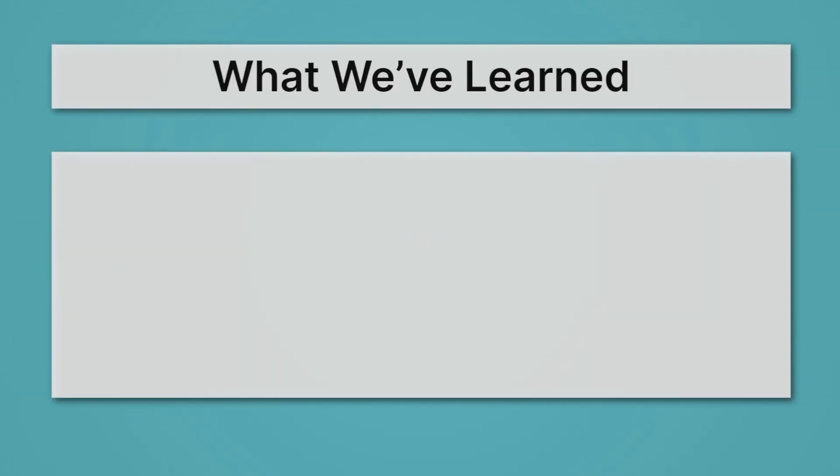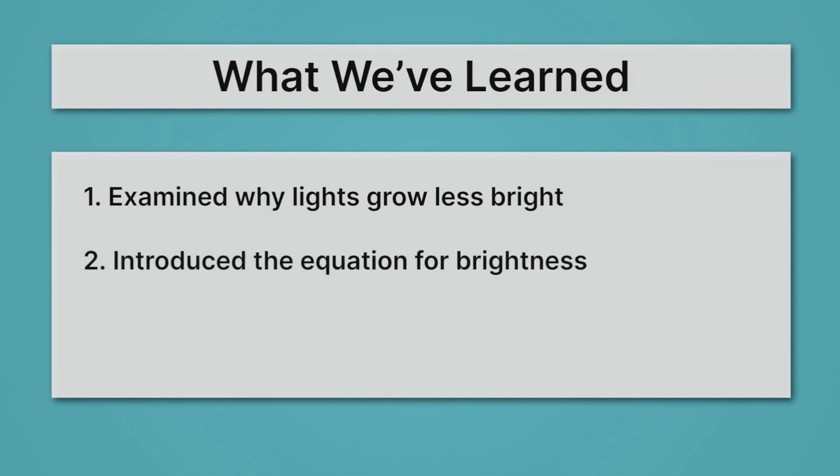Let's review what we've learned. First, we examined why lights grow less bright. Namely, that as we get farther from a light, the light coming out of that source is smeared across a sphere of a greater and greater size. So there's just less light per area. Then we introduced the equation for brightness, where we saw the surface area of the sphere played a really important role. Then we used the brightness equation to see how the brightness of lights varies with distance.